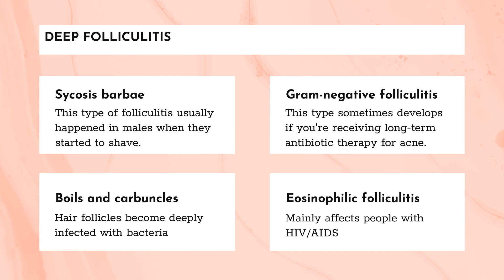The third form of deep folliculitis is a boil or furuncle, which occurs when hair follicles become deeply infected with bacteria. A boil usually appears suddenly as a painful pink or red bump. A cluster of boils is called a carbuncle.